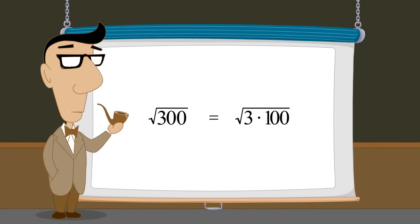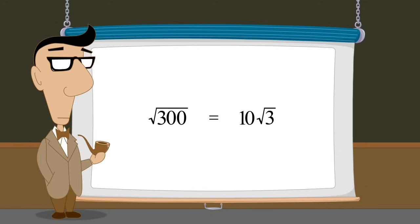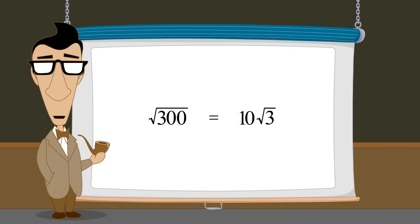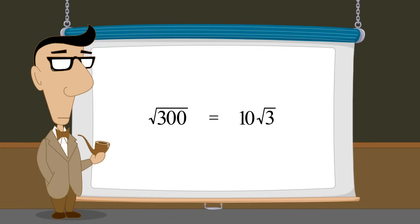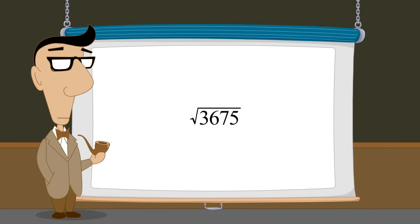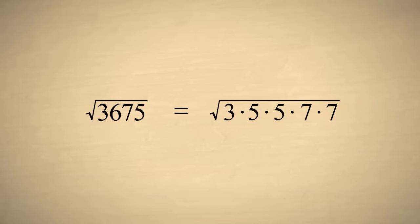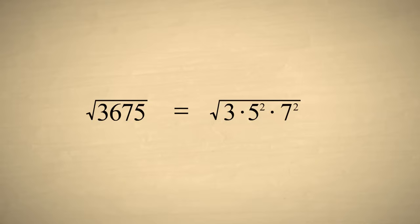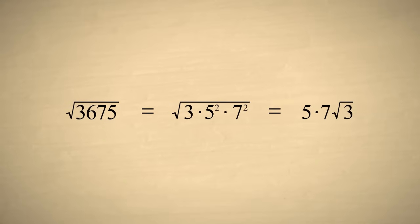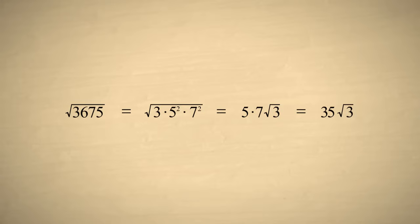In many cases, it is not obvious if there are factors which are perfect squares. For instance, let's say we want to simplify the square root of 3675. To find out if this number contains any perfect square factors, we can first factor the number into all its prime factors. Doing this, we get 3 times 5 times 5 times 7 times 7, or 3 times 5 squared times 7 squared. We can then bring the square roots of 5 squared and 7 squared out from under the radical sign, and write the expression as 35 times the square root of 3.